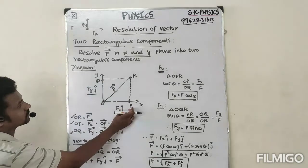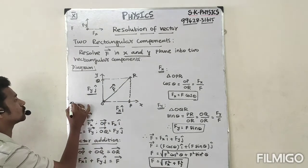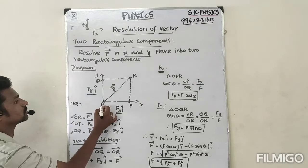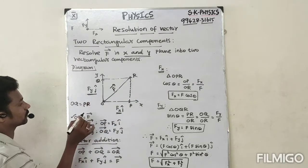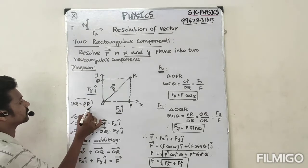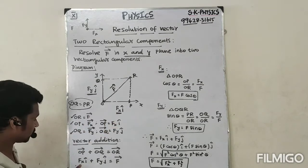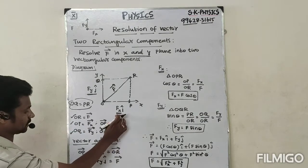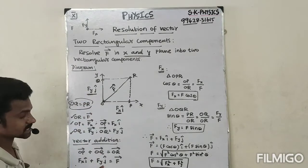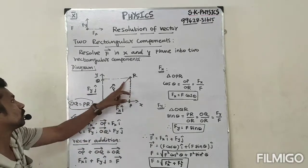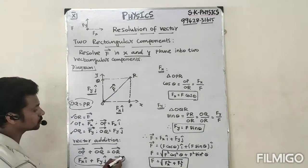An important point: OQ is equal to PR. Remember that — it is very helpful. Now OP vector is Fx i-cap, OQ vector is Fy j-cap, and OR vector is F. This is what we are going to finalize.